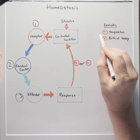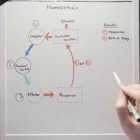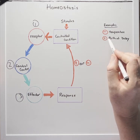So let's look at two examples, one for negative feedback which is going to be temperature and one for positive feedback which is going to be birth of the baby. So let's start off with a negative feedback loop.